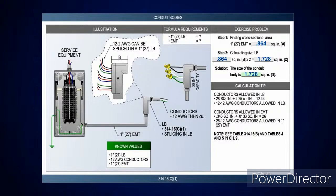How do you know what that cubic inch value is? You take 0.34 square inches and divide it by 0.0133 square inches, and that gives you the conductors allowed — which equals 26. It's showing you, depending on how you set this up based on the tables, that's how you go in and determine the size of the conduit body and the fill required.